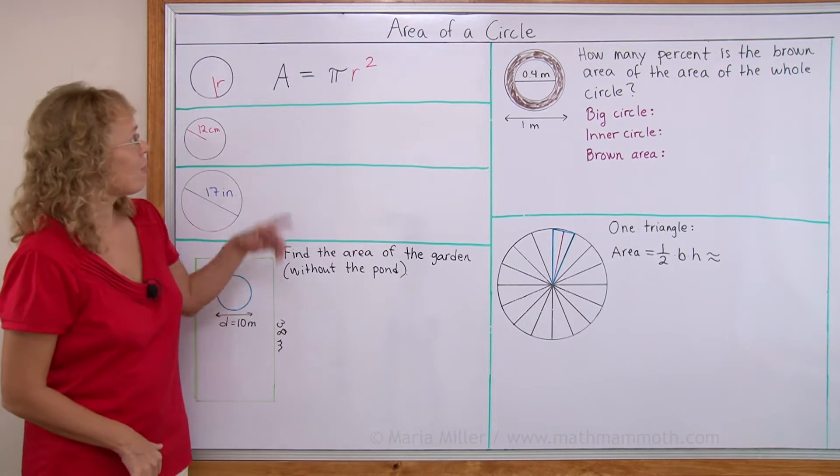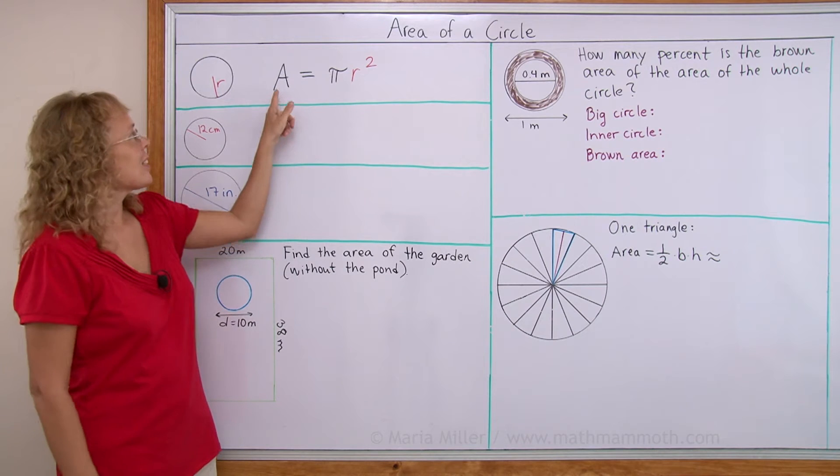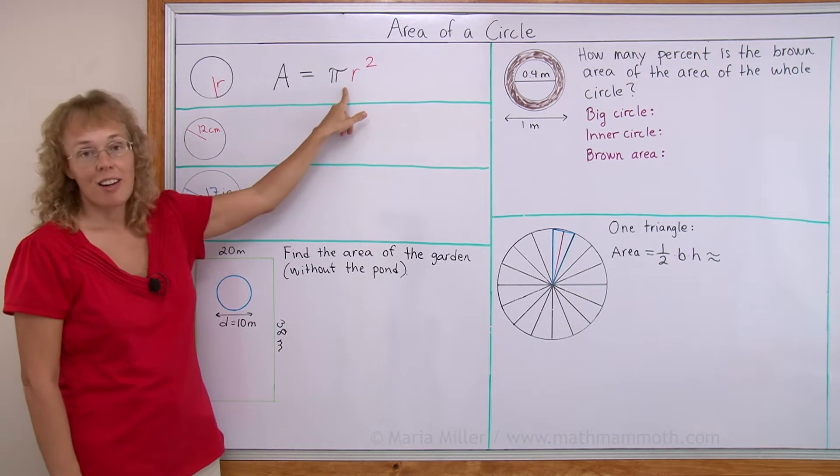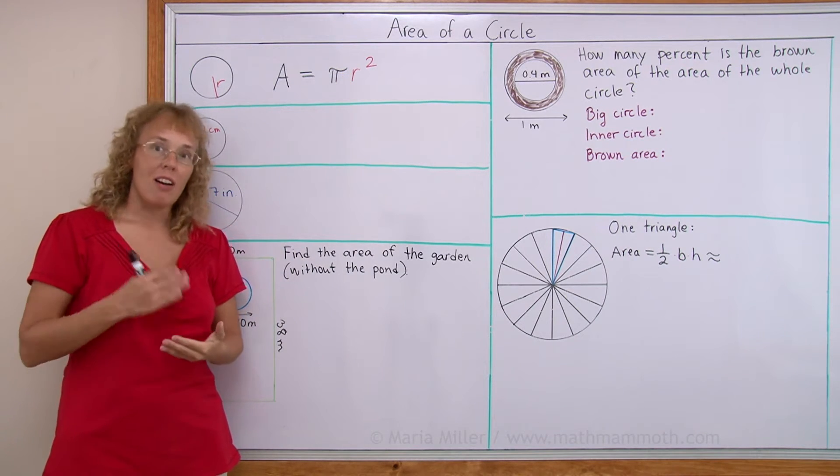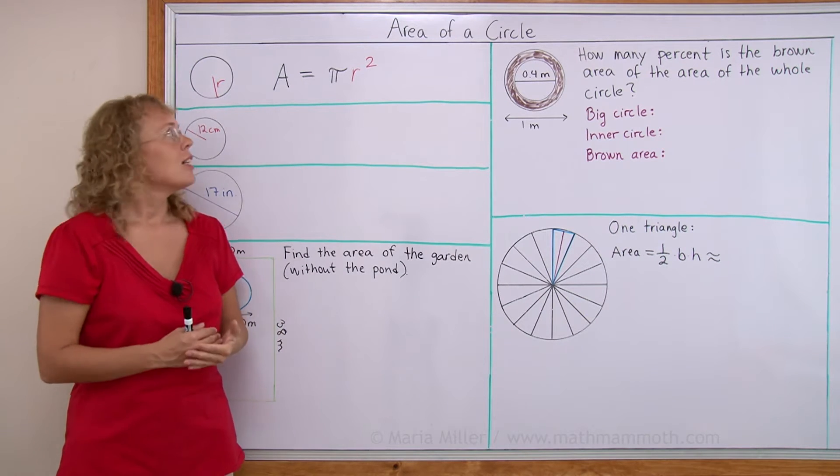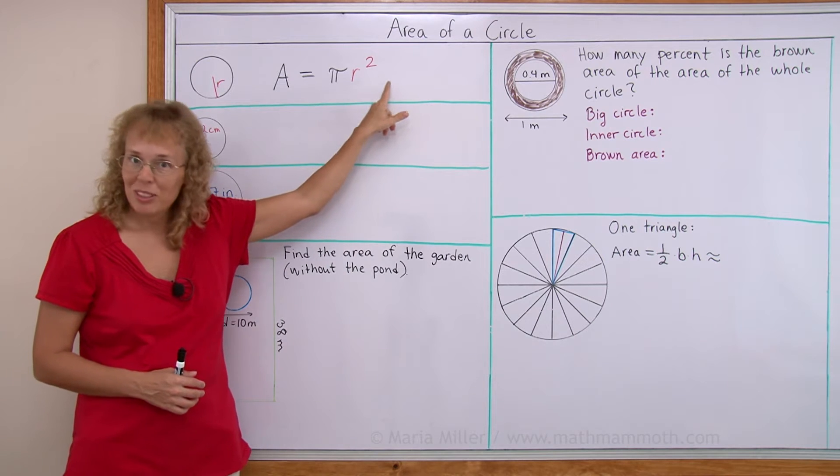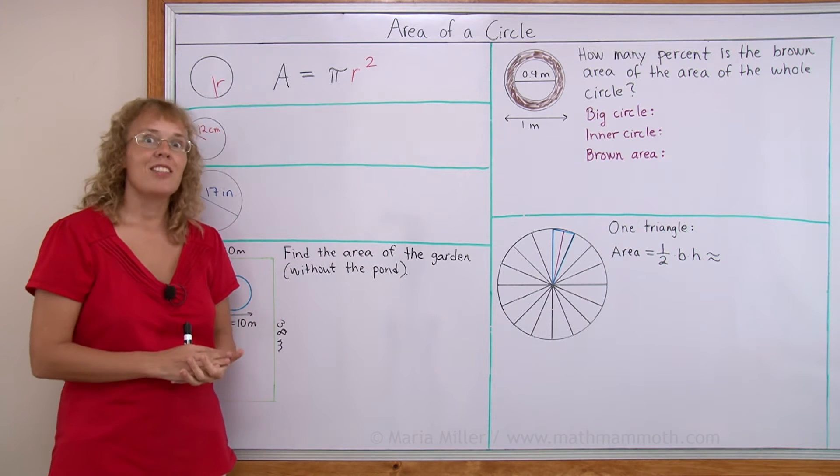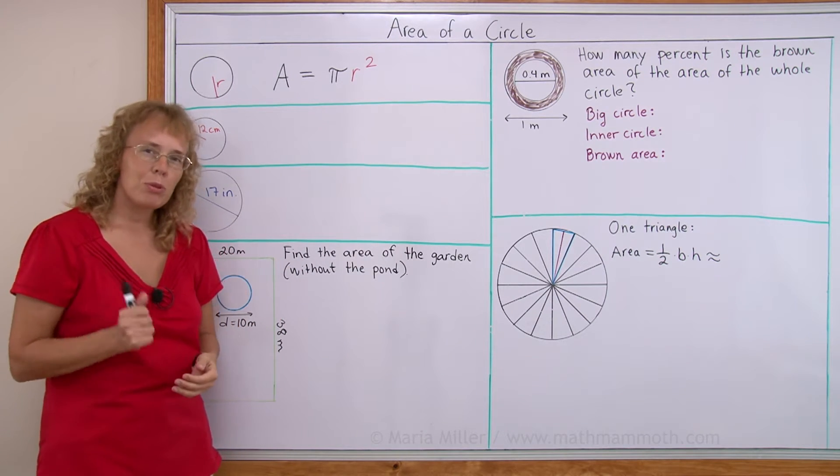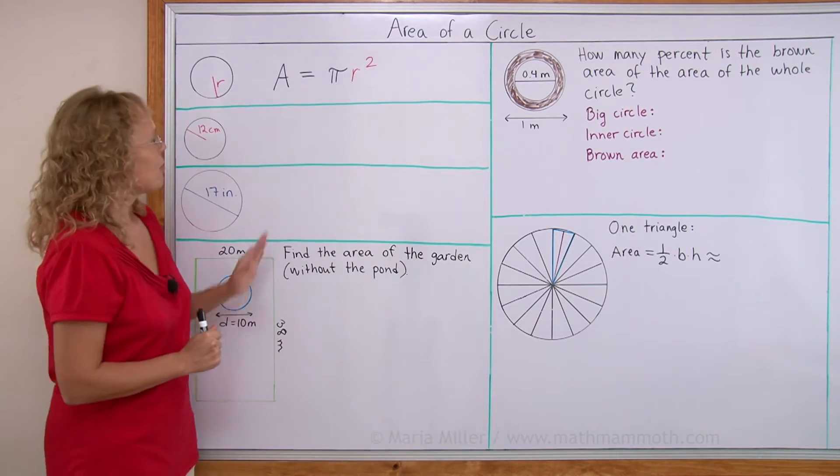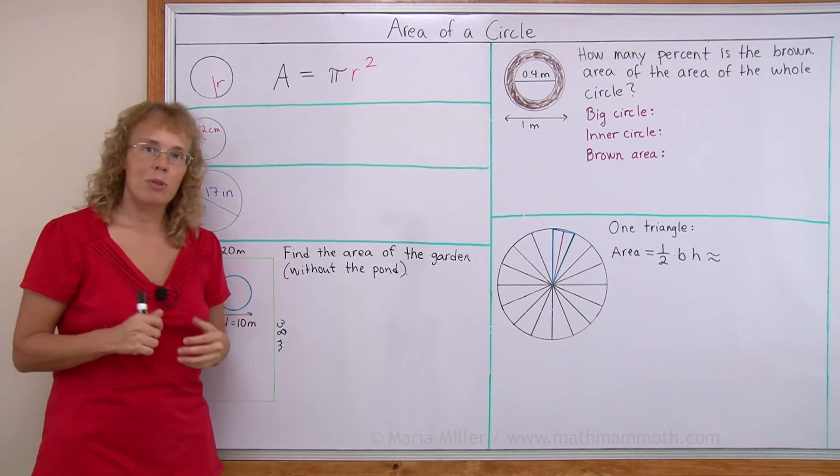I'm just going to give you the formula right off the bat. It's area of a circle equals pi times r squared. r squared means r times r. And it is the radius. So pi times radius times radius is the area of a circle. And we're going to look at the proof here at the end of the lesson. But first let's calculate and go through some problems.